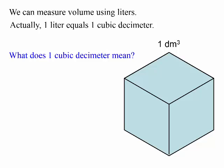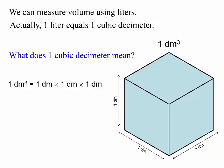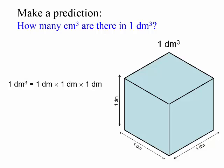What does 1 cubic decimeter mean? 1 decimeter cube has a length of 1 decimeter, a width of 1 decimeter, and a height of 1 decimeter.